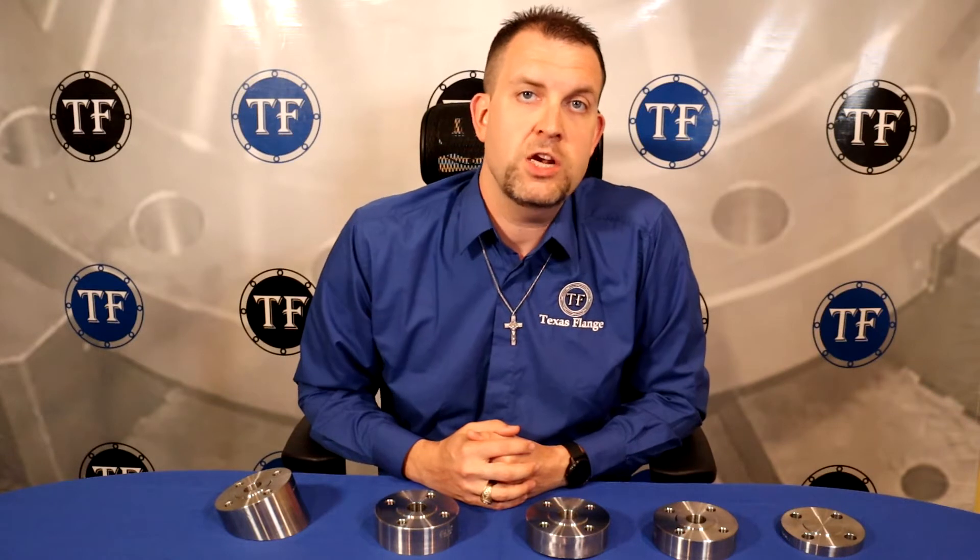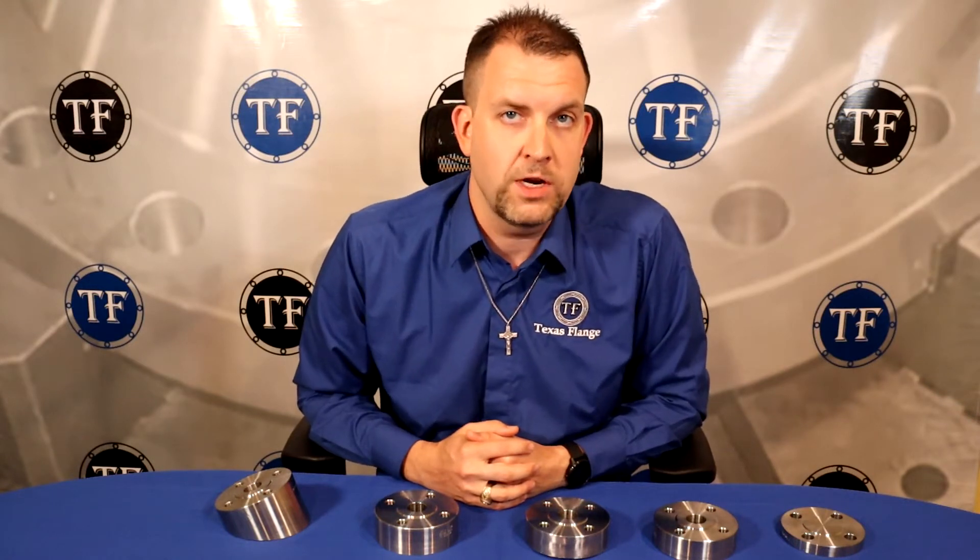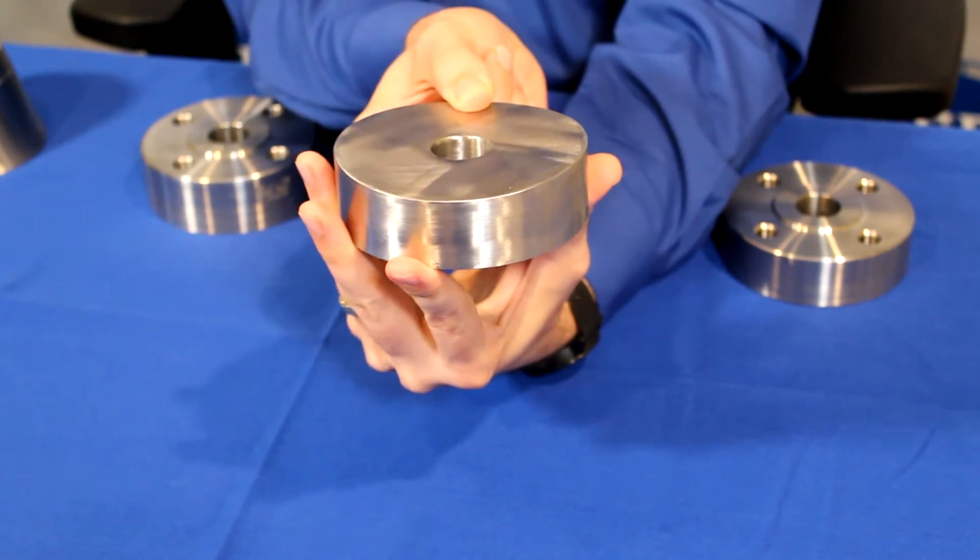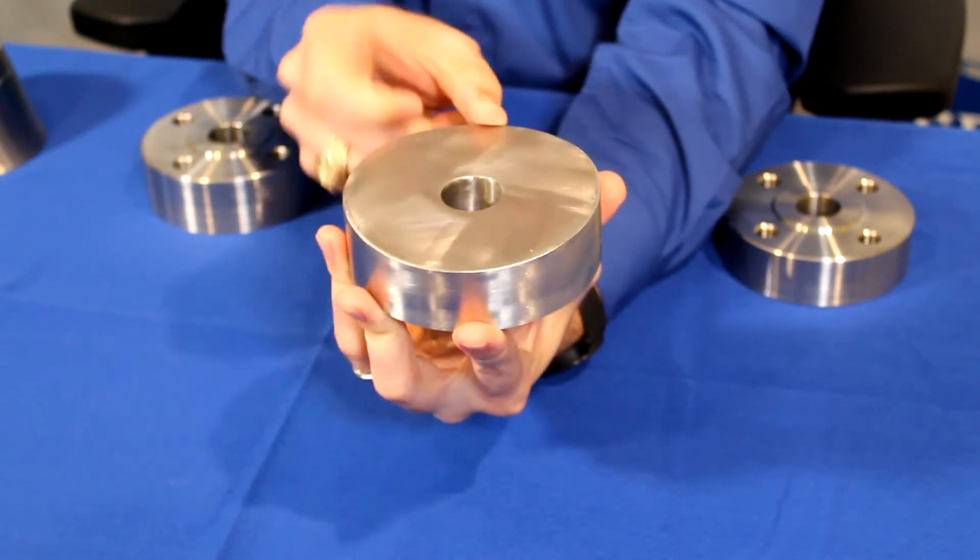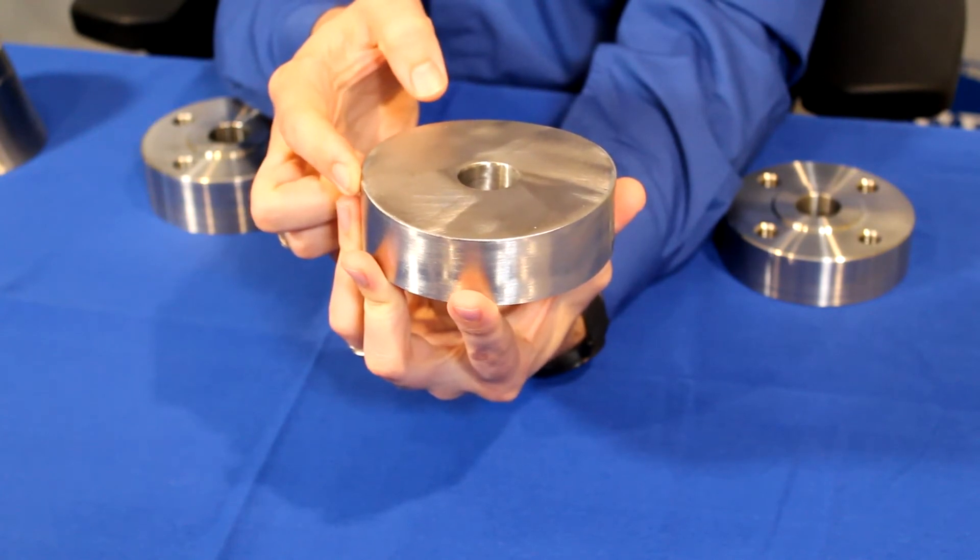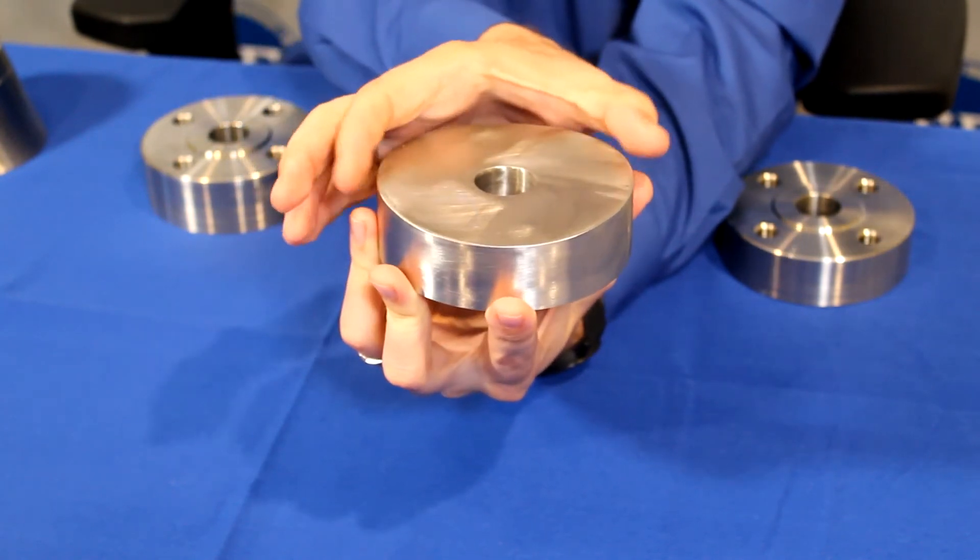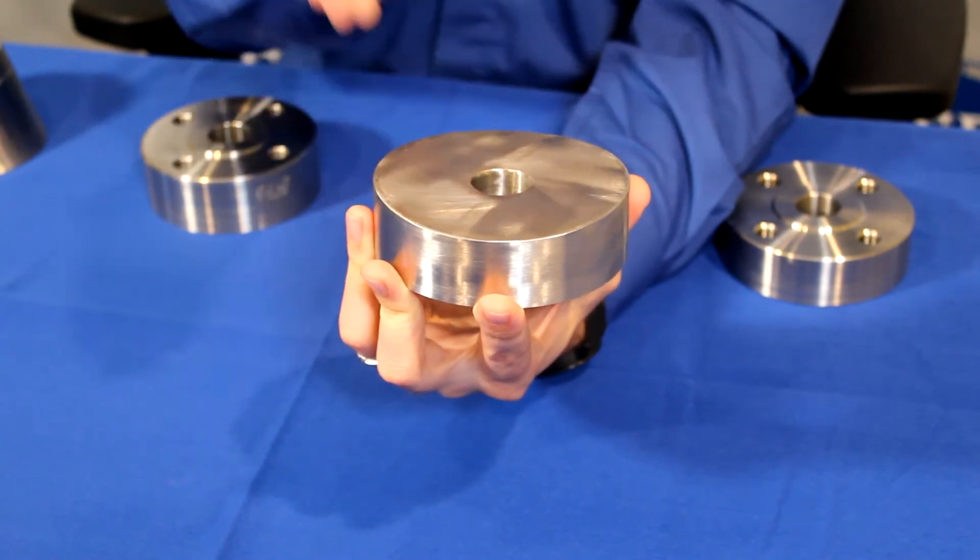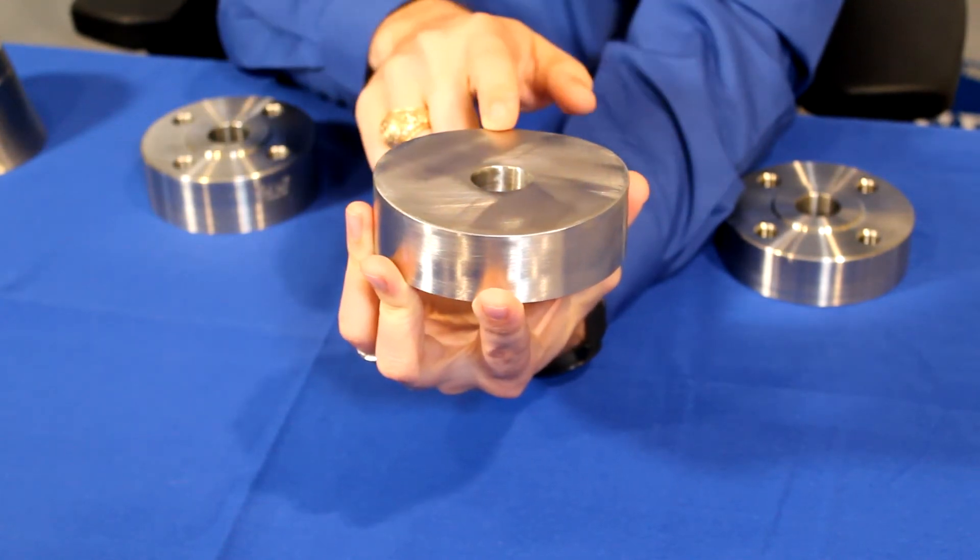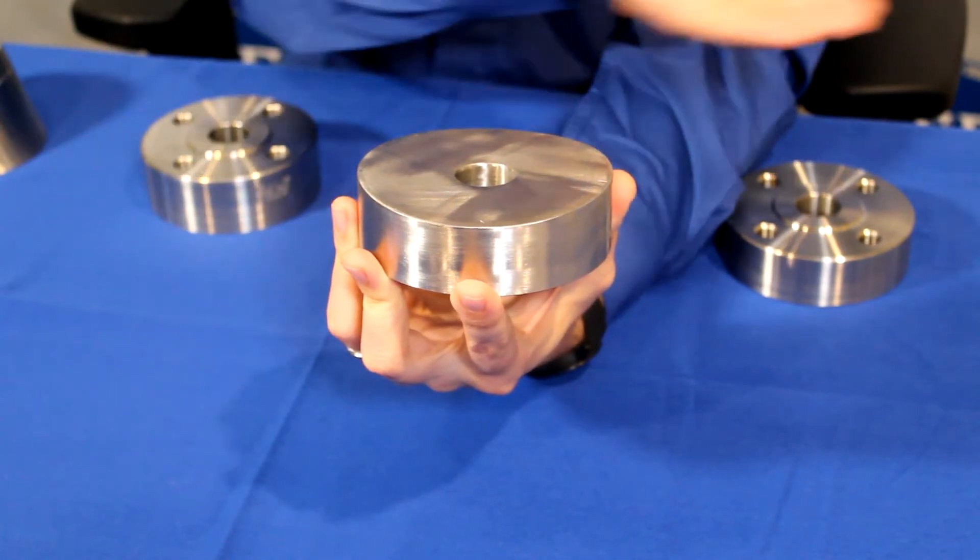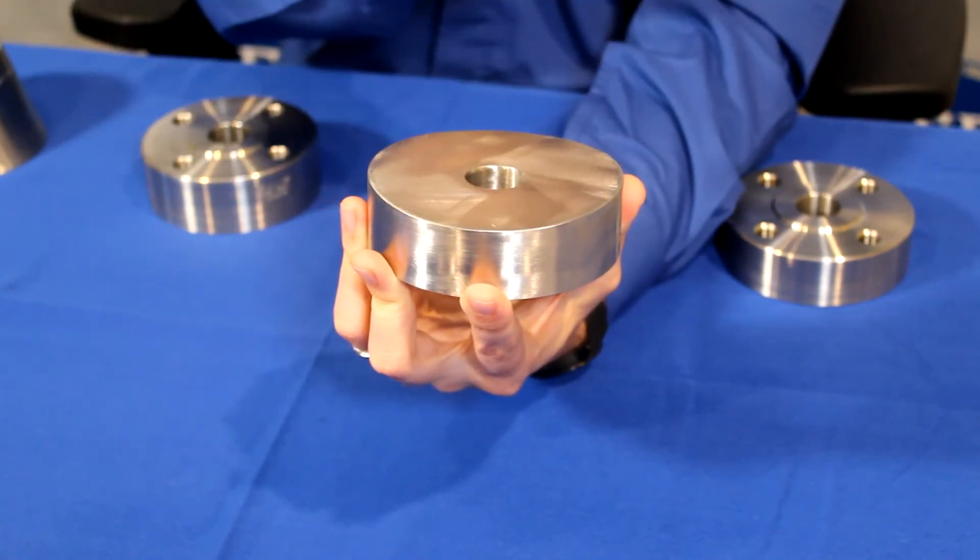Note that the radius size will drastically change what the bottom of that stud outlet looks like. The minimum thickness normally is controlled and then any extra radius will be accomplished with added material. So if you have a very small radius on your vessel, you'll see a large curvature on your stud outlet. Conversely, a very large vessel would have almost no curvature.